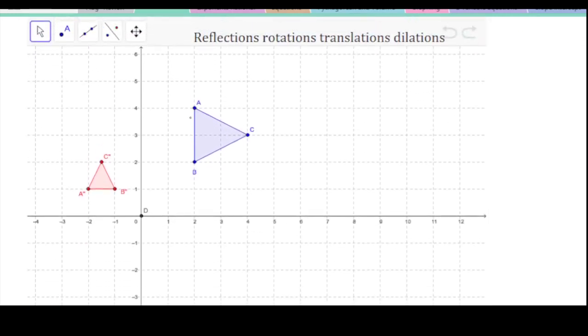And so I notice that this is 1, 2 long. The line from A to B. The line from A to B is down here, and it's only 1 long. So remember, we do new over old. So 1 over 2 is my dilation. So this was dilated by 1 half.